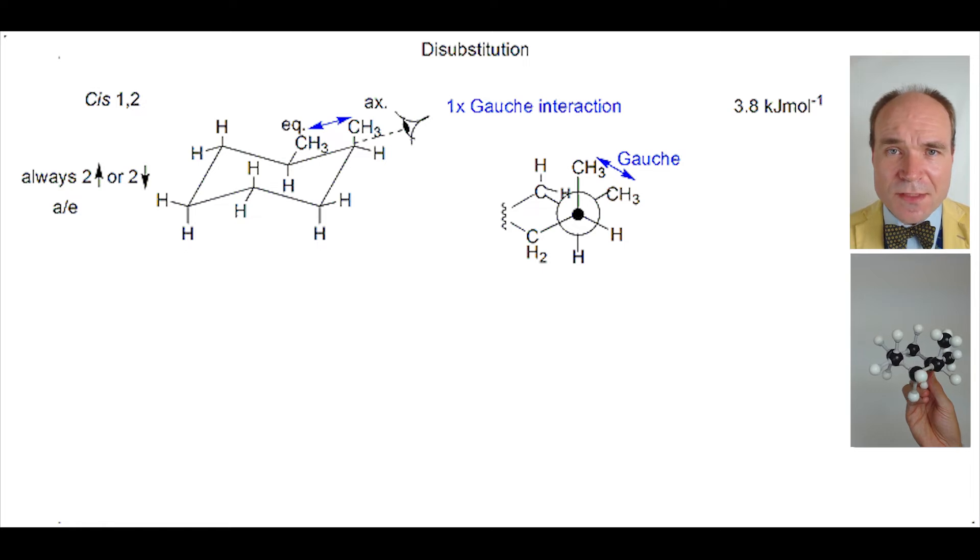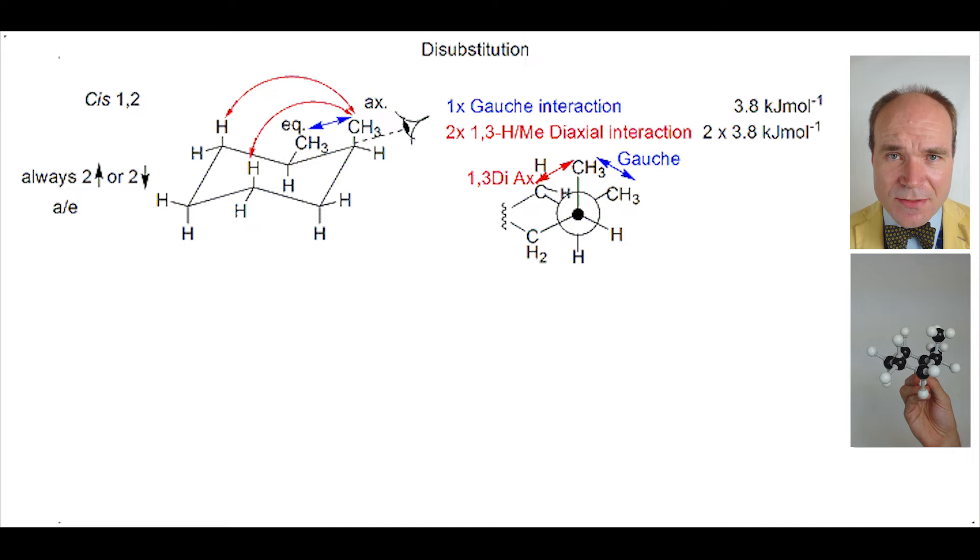There's another type of steric strain here and that's a 1-3 diaxial interaction between hydrogen and methyl. This is also worth 3.8 kilojoules per mole but there are two of them which brings us to a total of 7.6 kilojoules per mole. So if we add all the interactions up, the gauche interactions and the 1-3 diaxial interactions, we have a grand total of 11.4 kilojoules per mole of energy added to the molecule due to steric strain.